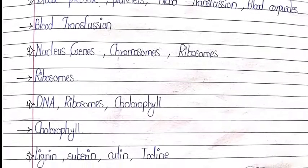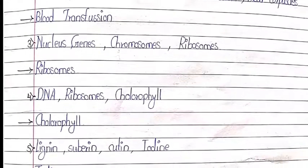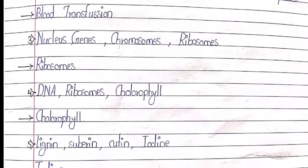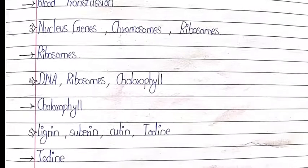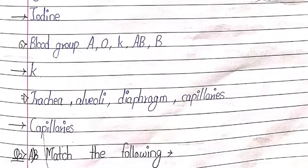Fifth: lignin, suberin, cutin, iodine. Answer: iodine. Sixth: blood group A, O, K, AB, B. Answer: K. Seventh: trachea, alveoli, diaphragm, capillaries. Answer: capillaries.